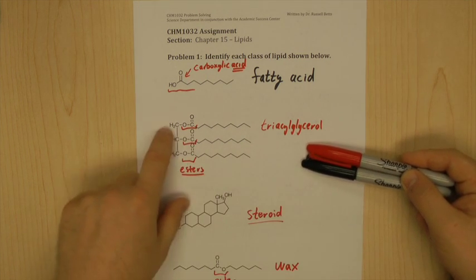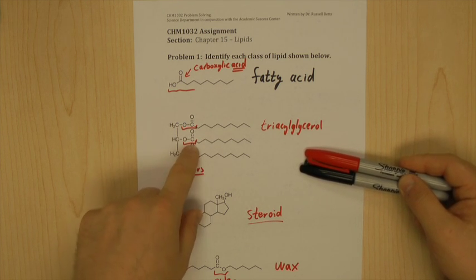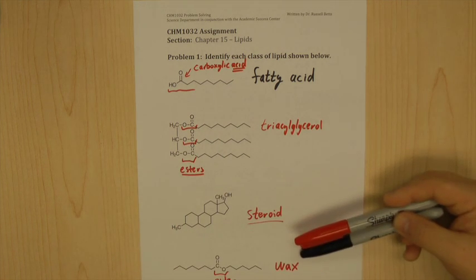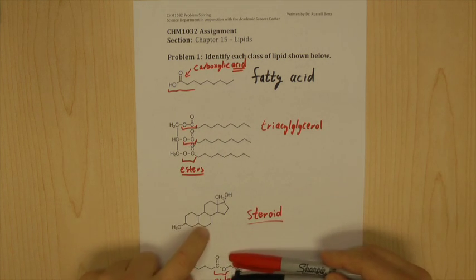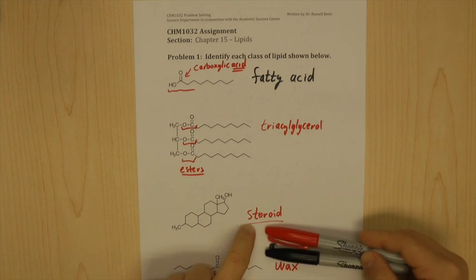If you want to think of it in some way, three esters, three hydrocarbon chains, three tri-tri-tri-acylglycerol. Six-membered ring, six-membered ring, six-membered ring, five-membered ring, steroid.